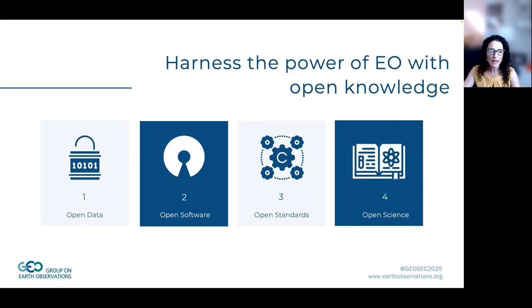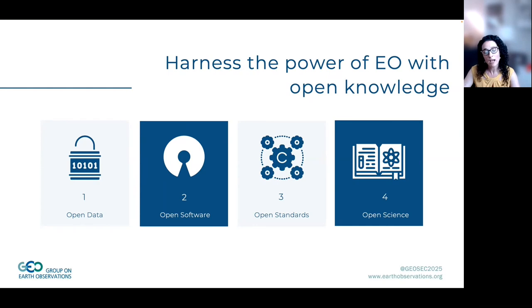Openness in science is a fundamental requirement to ensure the integrity of research, accelerate scientific progress, and disseminate knowledge among scientists, decision makers, and increasingly the involved citizens. All stages of the research process should be findable, accessible, and reusable. Open data needed to reproduce scientific results or support public decision making should be released publicly under an open data license and follow the GEO data sharing and management principles.